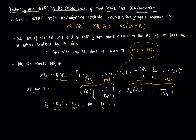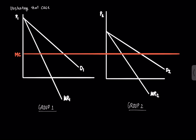Let's illustrate this scenario. For simplicity we'll assume linear demand curves and constant marginal cost. We have a graph for group one and a graph for group two. Their demand curves are different, so their marginal revenue curves are also different. However, the marginal cost to the firm is the same whether it produces for group one or group two — that's the constant orange line you see there.